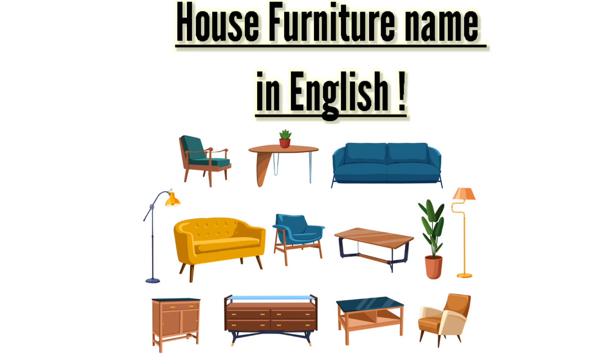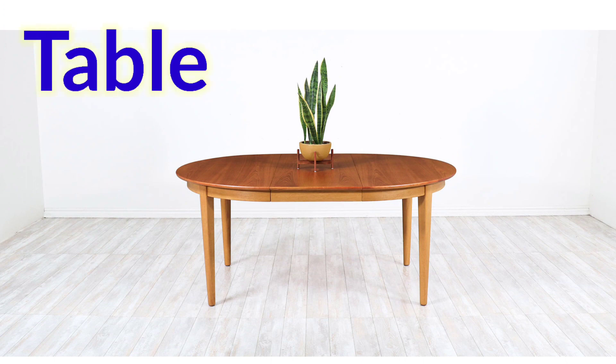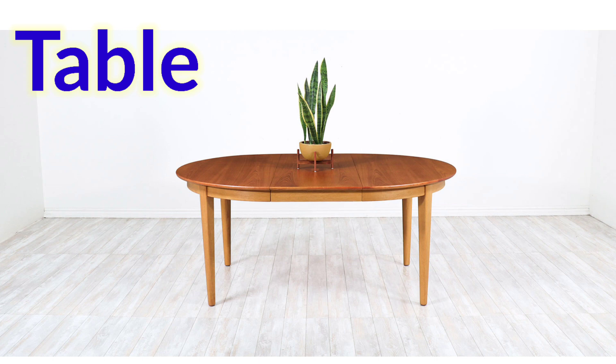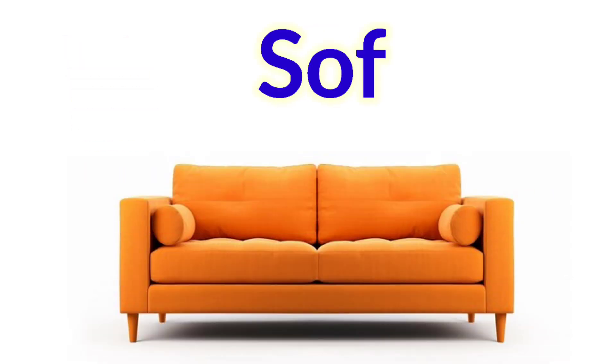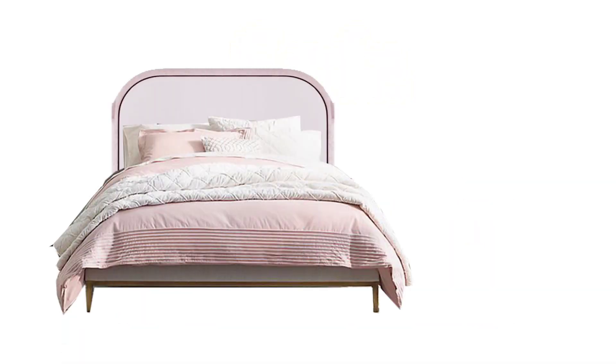Hello Kids! Let's learn house furniture names in English. Table, T-A-B-L-E, Table. Chair, C-H-A-I-R, Chair. Sofa, S-O-F-A, Sofa. Bed, B-E-D, Bed.